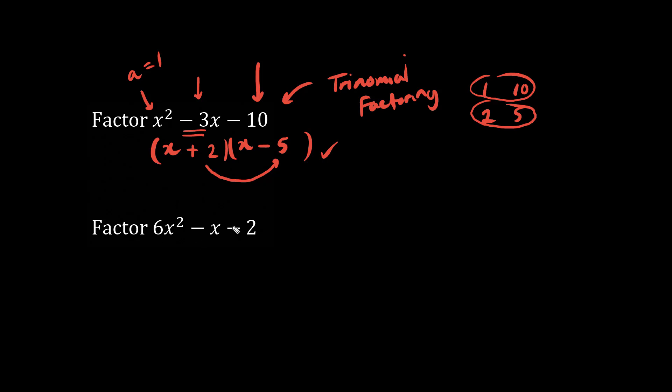So for this question, we're now going to do trinomial factoring where a is not equal to 1, or we could say a is greater than 1. In this case, a equals 6. There's two ways to do this. One is by guessing, and one is called rainbow method. Let's just try guessing.